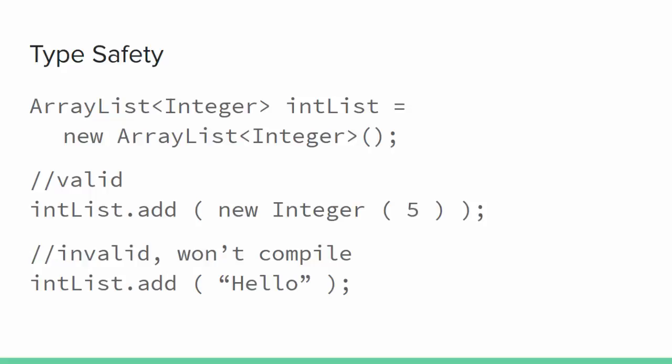This is a big deal for ensuring program correctness. You wouldn't want to accidentally store something that isn't an integer in your ArrayList and then have your program crash when you try to find, say, the square root of every element and get to "hello".